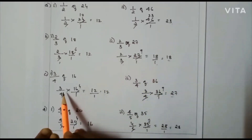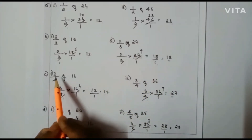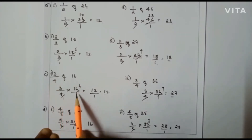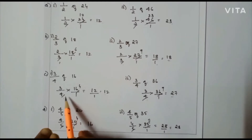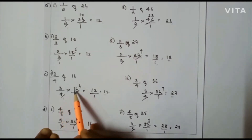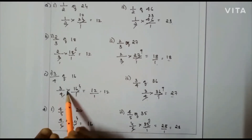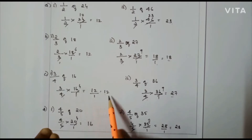The next problem: 3/4 of 16, that is 3/4 × 16/1. Here I can cancel: 4 divides 16 giving 1 and 4. So 3 × 4 = 12 by 1, where 12 is the final answer.